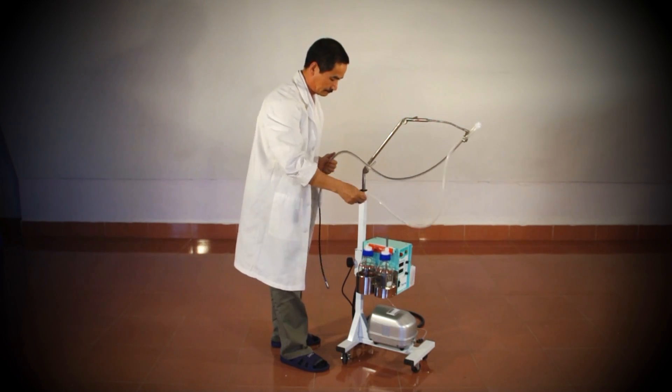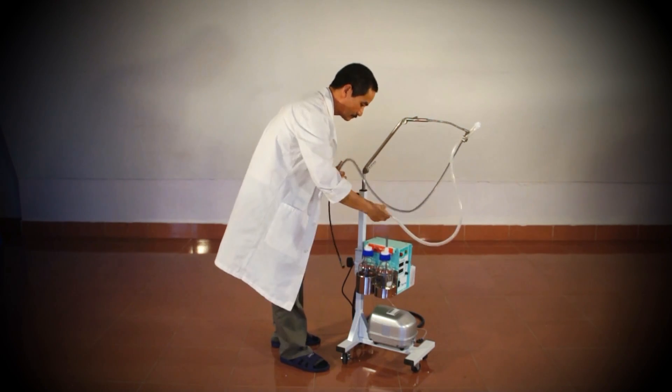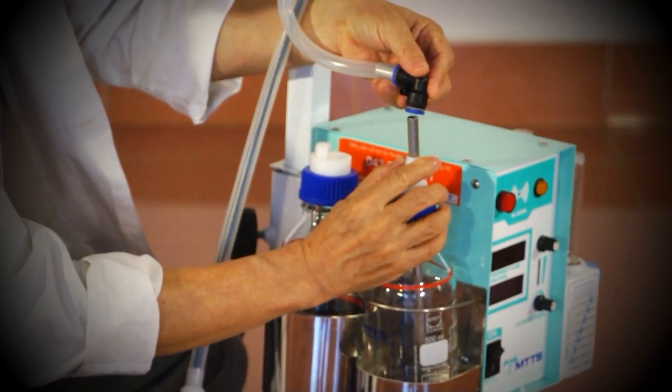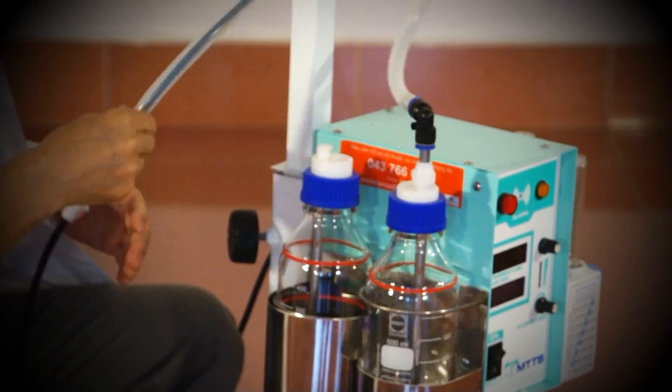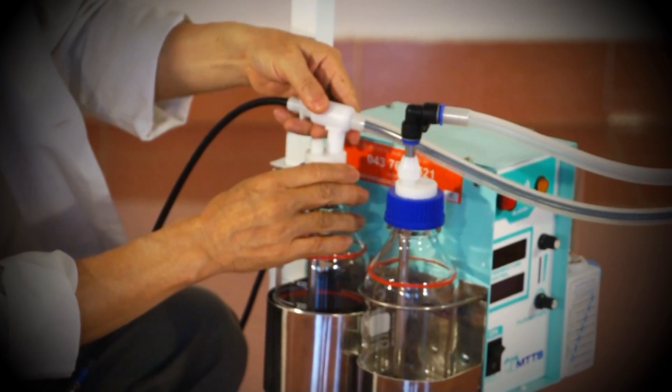Then connect each tube to its appropriate bottle. The tube is attached to the PEEP bottle. The tube with the heater wire is attached to the humidifier bottle.